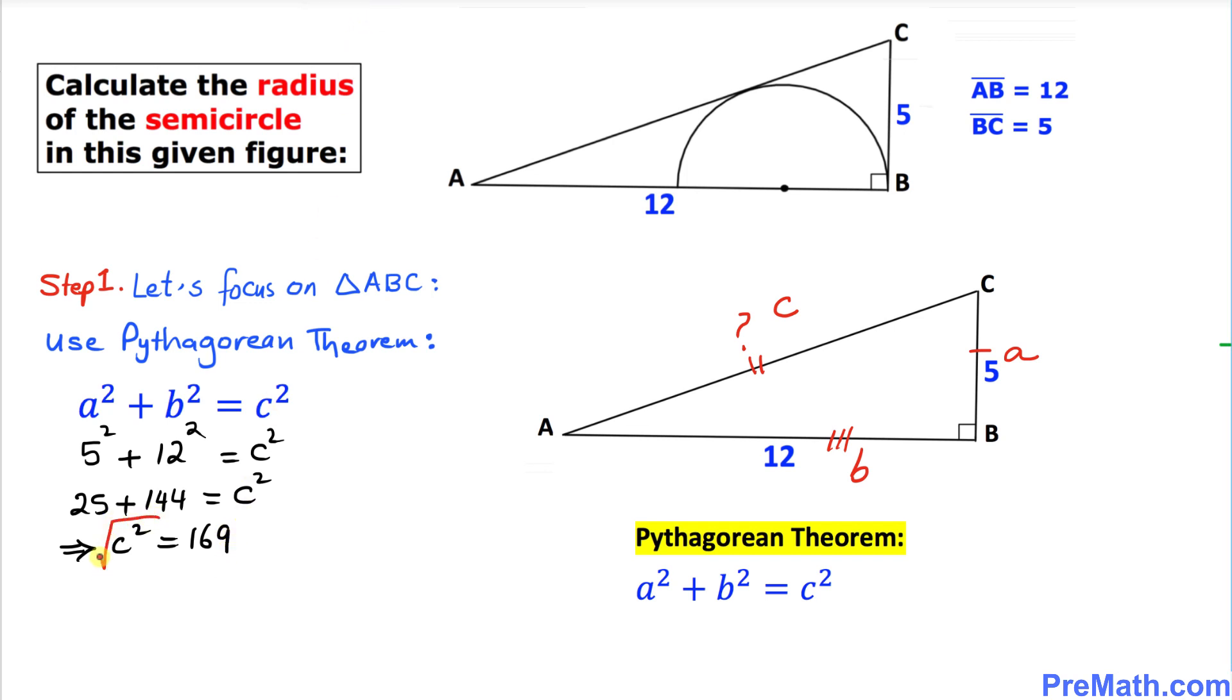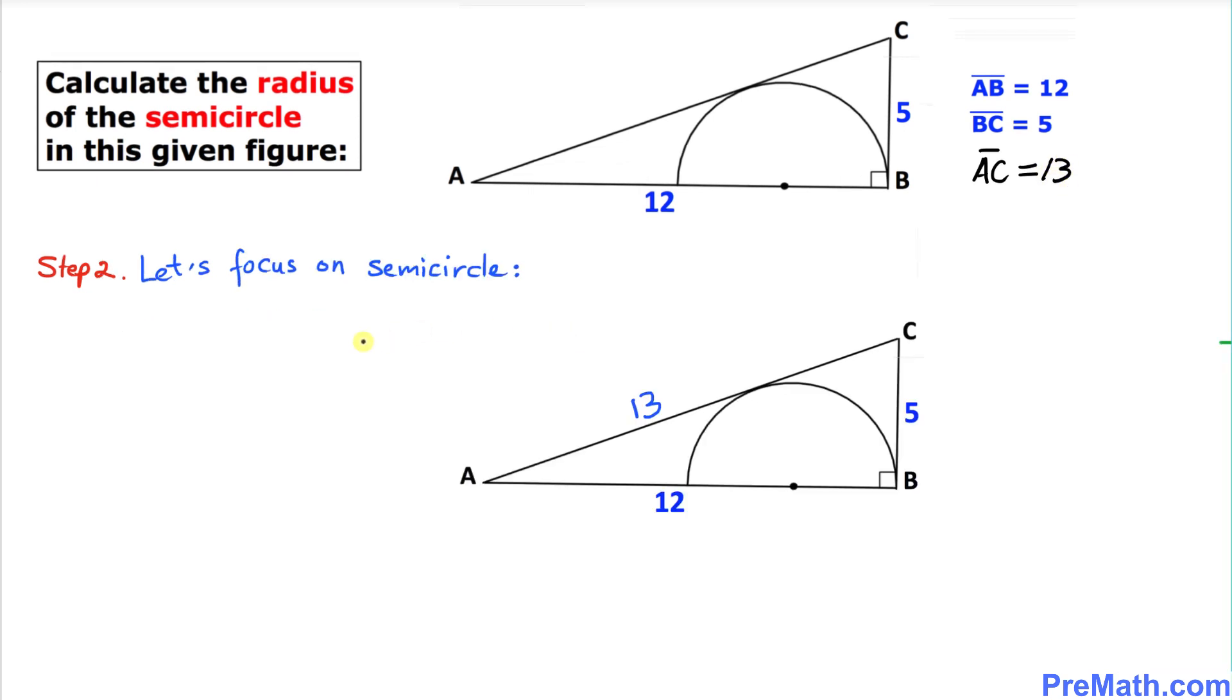If we take the square root on both sides, C is going to be equal to 13 units. That's our C value, which means the length of this side AC is 13 units.